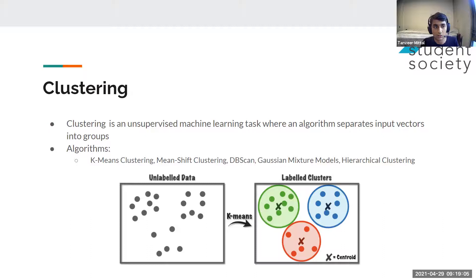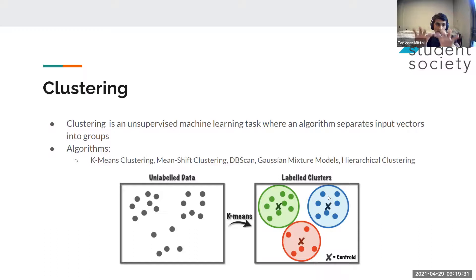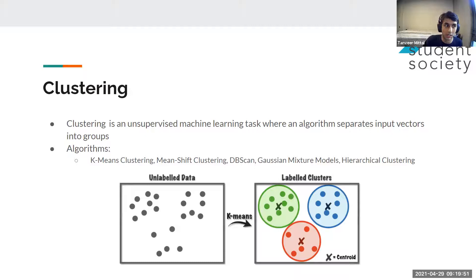Moving on, we also have clustering — another unsupervised machine learning task where we give an algorithm unlabeled data and want to separate input vectors into groups. In this diagram, data is originally unlabeled, then put through a k-means clustering algorithm that figures out to separate these clusters of points. It basically identifies groups within the data. Feel free to unmute or type in chat with any questions — I know this is complex material and I'm trying to keep it as high level as possible.